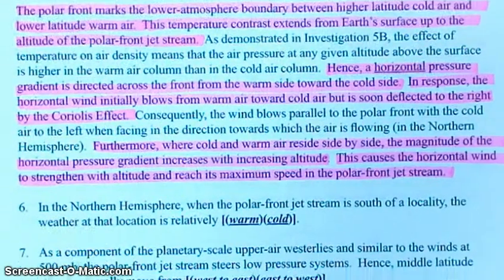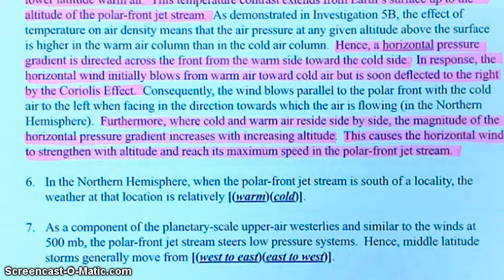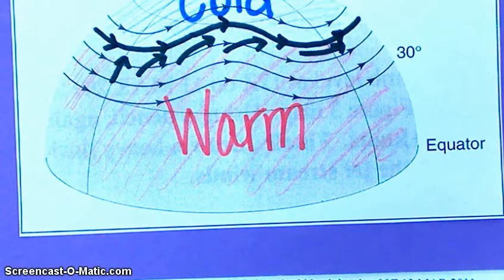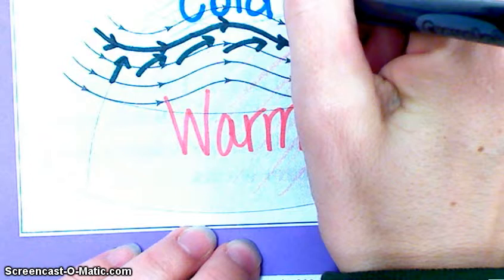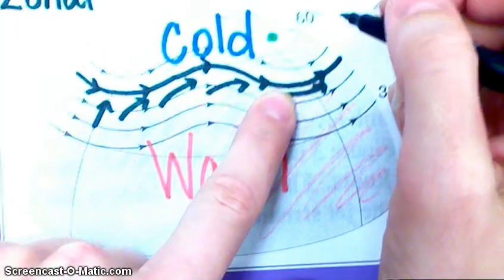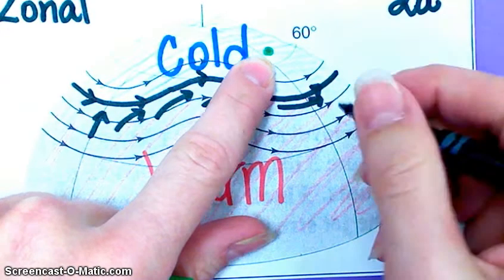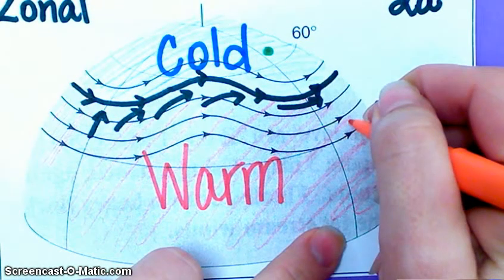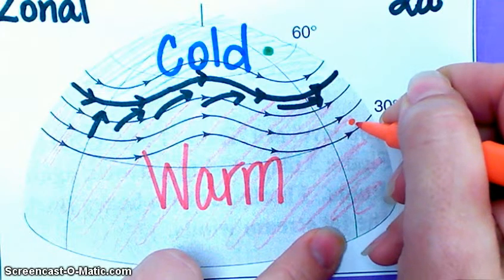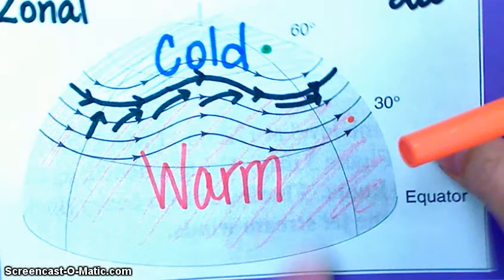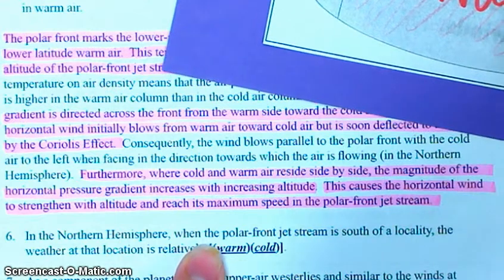Now all we need to do is answer questions 6 and 7. Number 6: in the Northern Hemisphere, when the polar front jet stream is south of a locality, the weather at that location is relatively warm or cold? Well, if the polar front jet stream is south of where you are, you are in a cold location. If the jet stream was north of where you were, you're in a warm location. The question asks when the jet stream is south of a locality, so you should select cold.